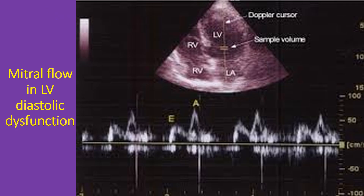The upper half of the image shows the apical 4-chamber view of the heart. The Doppler cursor and the sample volume are seen along the midline of the left ventricle. The lower half of the image shows the Doppler flow pattern across the mitral valve, with the X axis representing time and the Y axis representing velocity in centimetres per second.